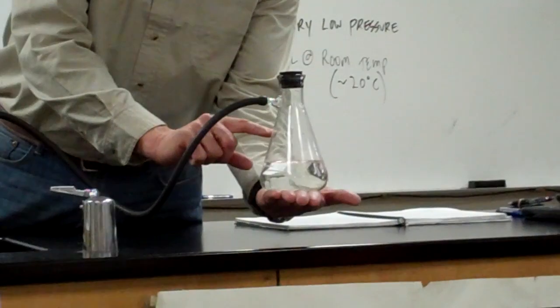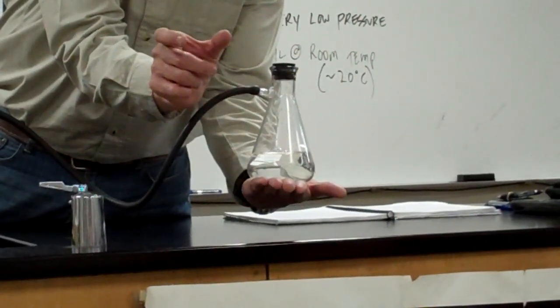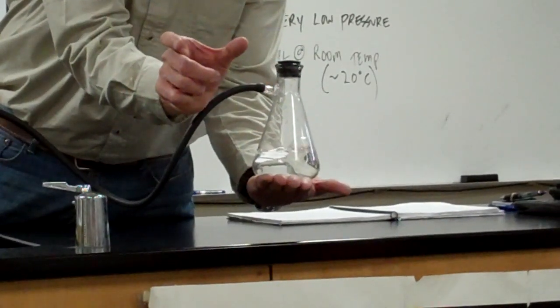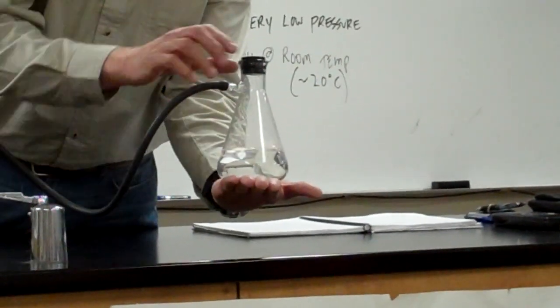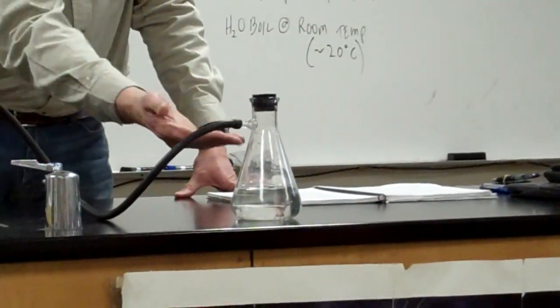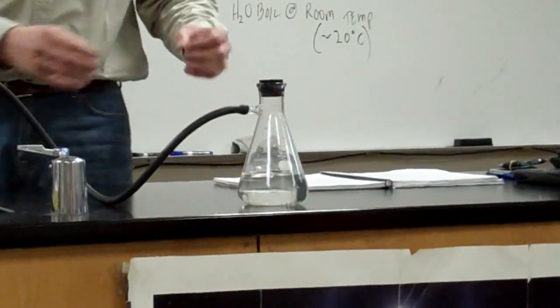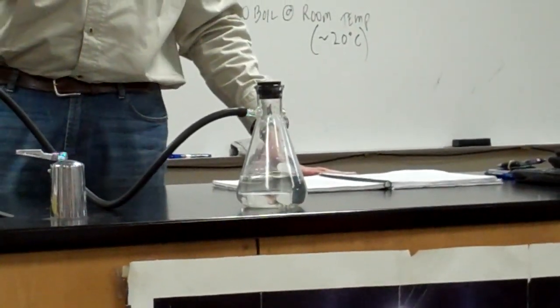If the pressure in here is so low, those water vapor bubbles can expand much more easily because there's no air pressure squishing them or preventing them from forming. So as I drop atmospheric pressure, which I'm doing inside this flask, it's easier for those bubbles to form, and the boiling point becomes lower.